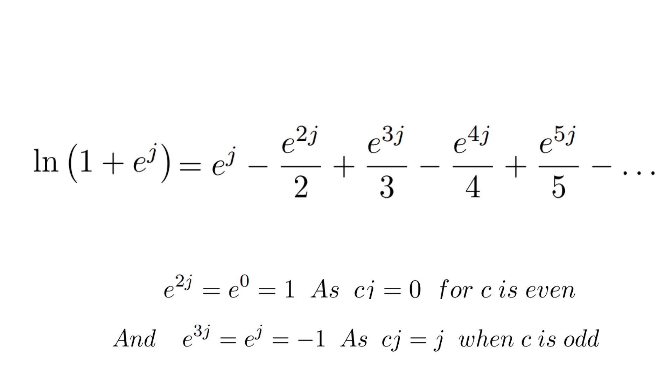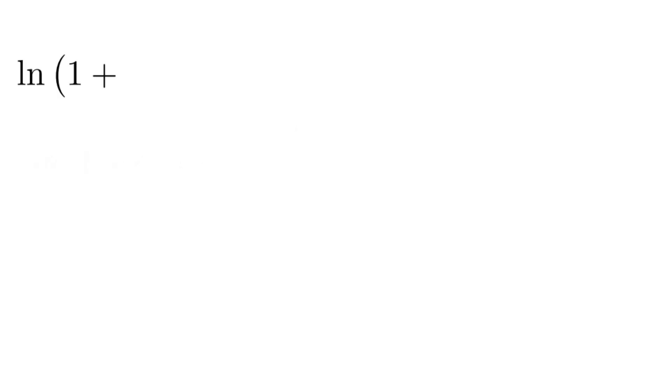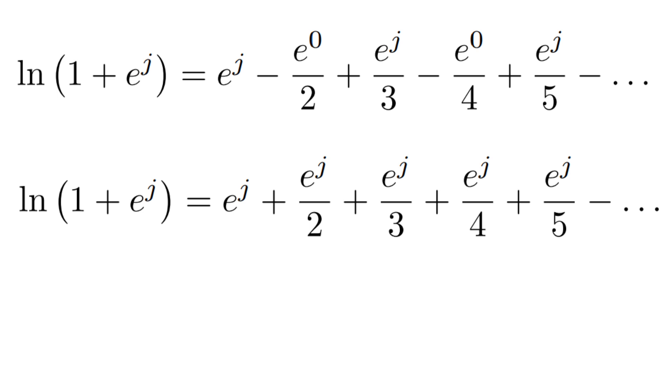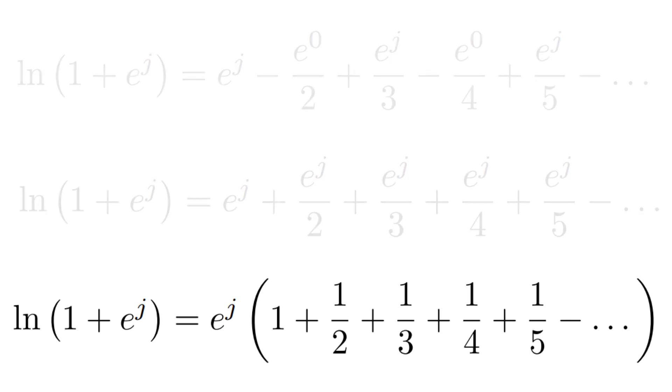Now that we have this simplification, let's substitute these values back into the original series. We find that the logarithm of 1 plus e raised to the power of j equals e raised to the power of j minus 1 divided by 2, plus e raised to the power of j divided by 3, minus 1 divided by 4, and so on. We can make this even more manageable by factoring out e raised to the power of j from the entire expression. This gives us e raised to the power of j times the sum of fractions: 1 plus 1 divided by 2 plus 1 divided by 3 plus 1 divided by 4, and so on.